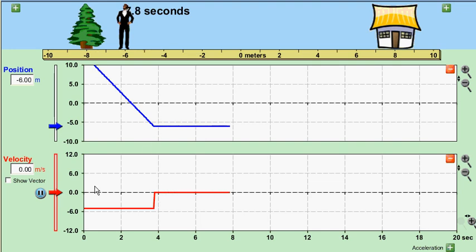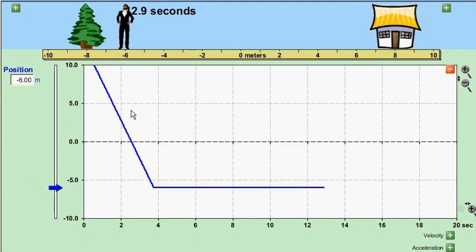So, the slope of the graph shows me how fast he's going. If it's zero slope, he's stopped. If it's a negative slope, he's moving back towards the origin.